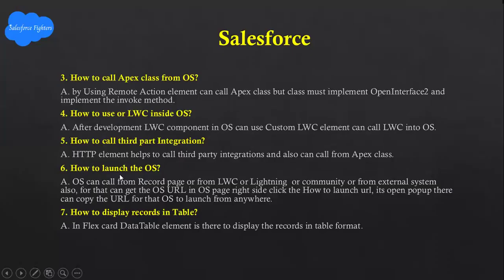Next question: How to launch OmniScript? OmniScript can be called from a record page, from LWC, from Lightning, from a community, or from an external system. Also, you can get the OmniScript URL from the OS page — right-click on 'How to launch URL', it opens and you can copy the URL to launch the OmniScript from anywhere.